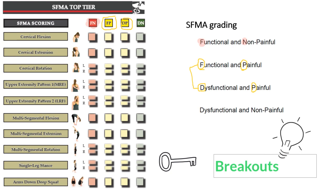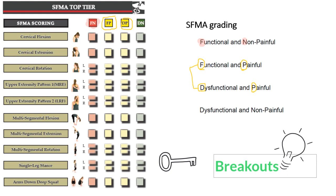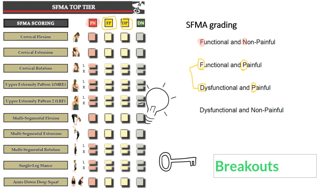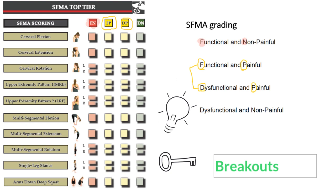Further exploration of abnormal movement patterns is done through what are called breakouts. Breakouts are used to get more detail about each abnormal movement pattern, whether it's due to pain or altered function. There are flow charts and algorithms you can follow for each of the top tier movements. You'll usually start with one breakout at a time, but there may be multiple breakouts to perform for any given individual.